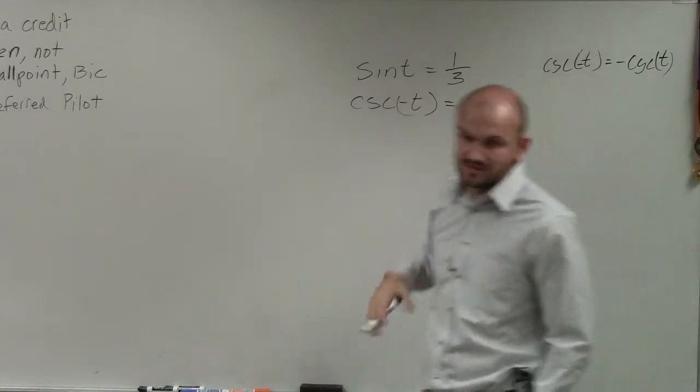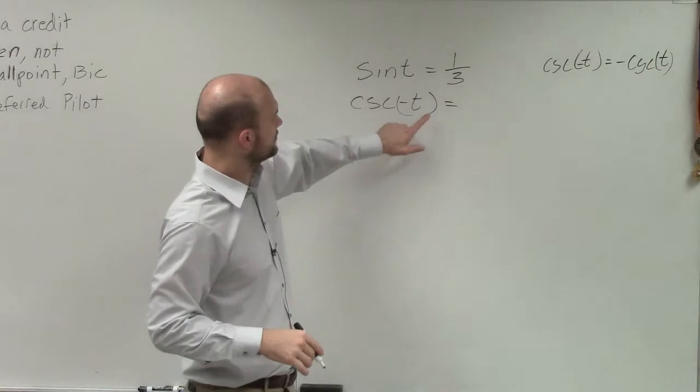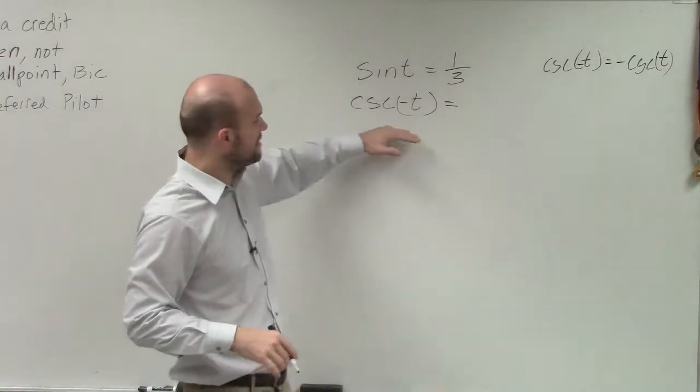So if sine of t is 1/3, then therefore I know that this is going to equal the cosecant of negative 3rd. But remember, ladies and gentlemen,